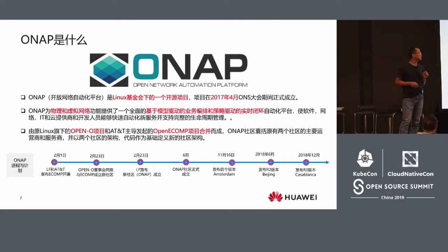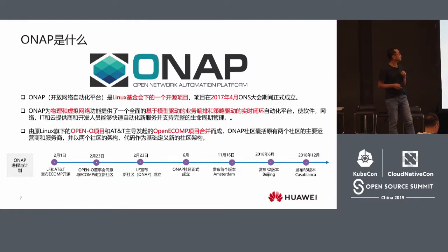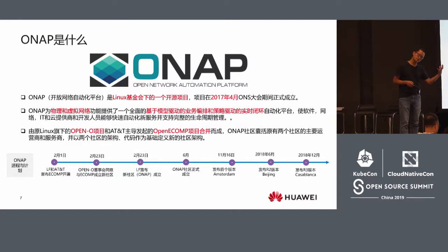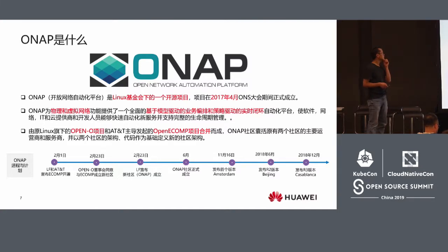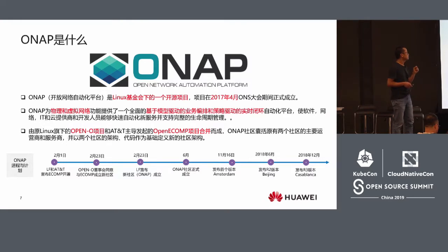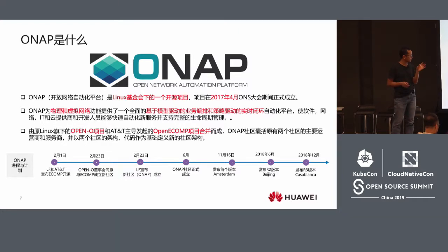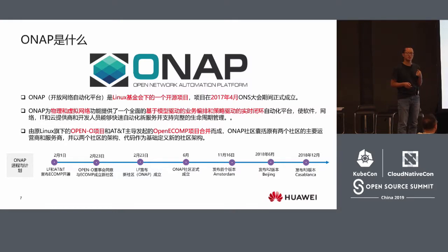After this introduction, we know what problems ONAP solves. Here is the official introduction: it is an open-source project under the Linux Foundation, developed for physical and virtual network functions. It provides an all-round automated platform — by automated, I mean if there is any problem emerging, the system will make the fix itself.